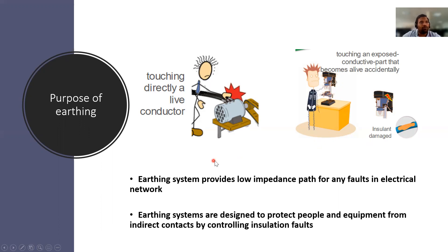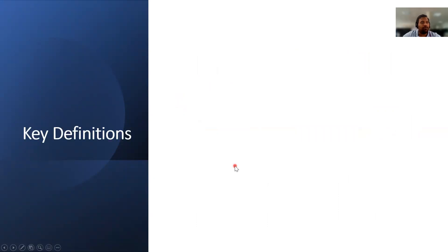This is why we need earthing. If we do the earthing, the fault current will flow through the ground. In order to protect persons as well as equipment, we need to implement earthing systems.